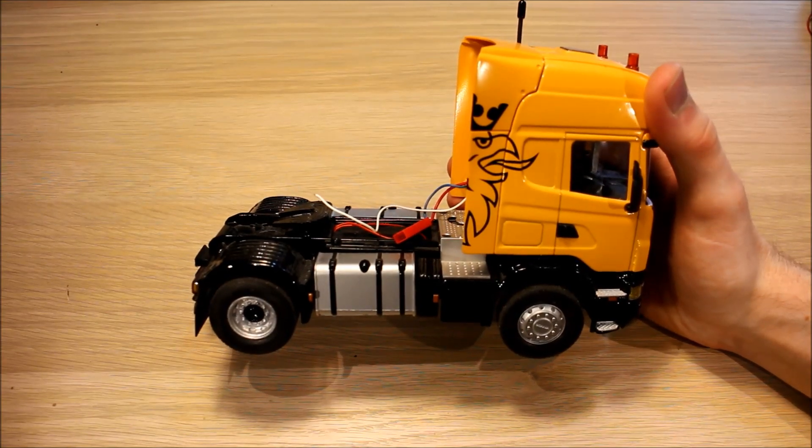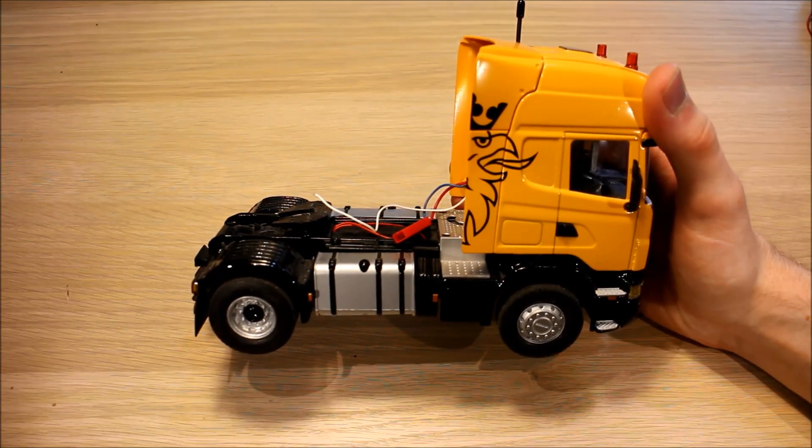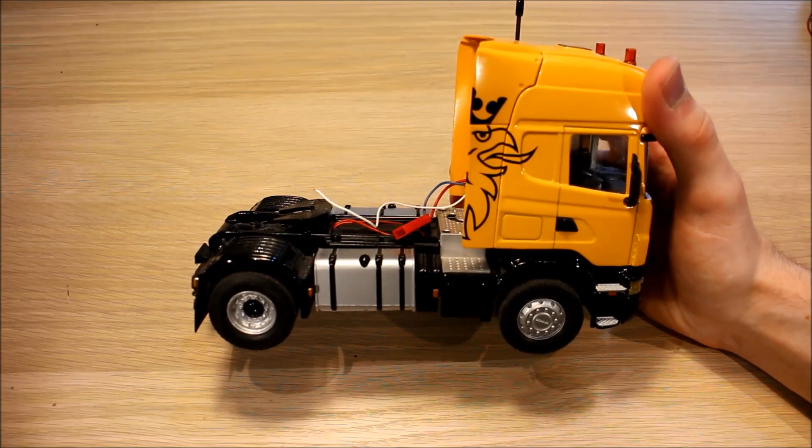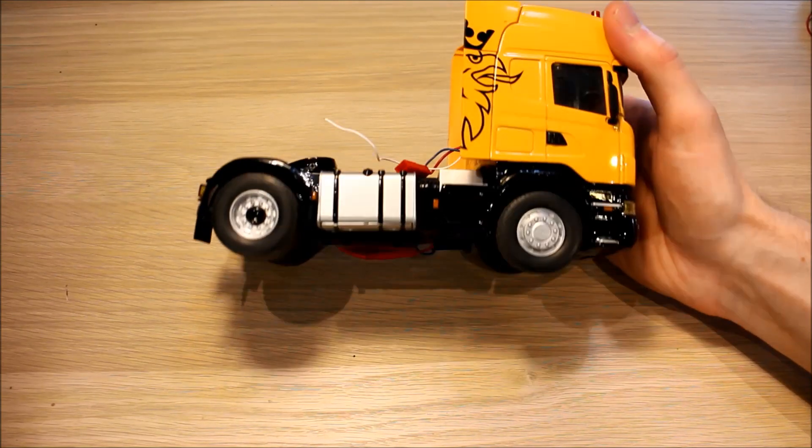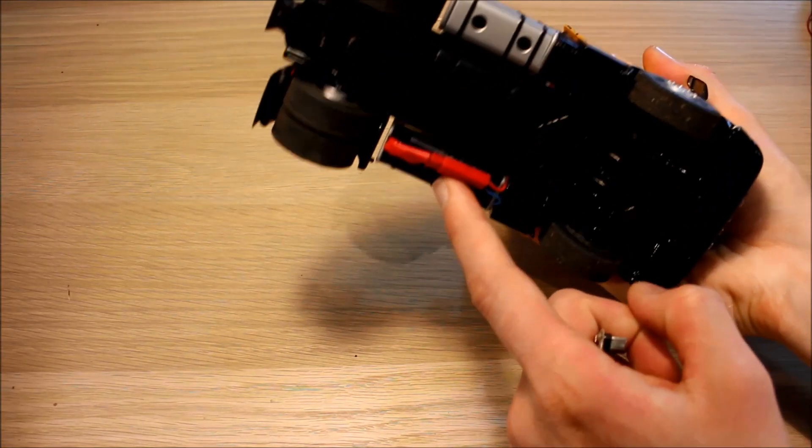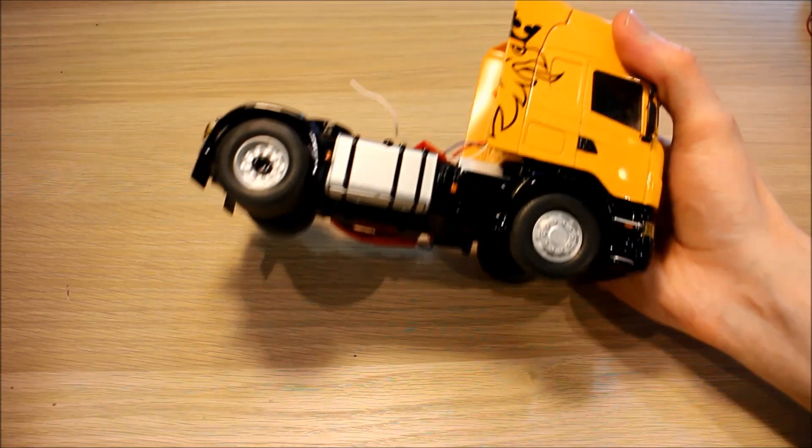Hello guys, my Massey 8680 upgrade is going pretty well, so I thought I'd better start on the upgrade of this Scania R620. At the minute it's working off a 7.4 volt battery, but I want to try and get it to work off 3.7 volts.